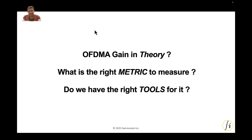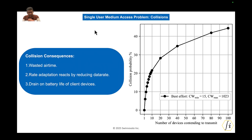Let us start with the theory — a little bit of motivation for why OFDMA. Here is a plot of collision probability with respect to number of devices contending to transmit for Wi-Fi. Assuming you have 10 or more devices, as you can see from the plot, we are going to experience a collision probability in excess of 20 percent.